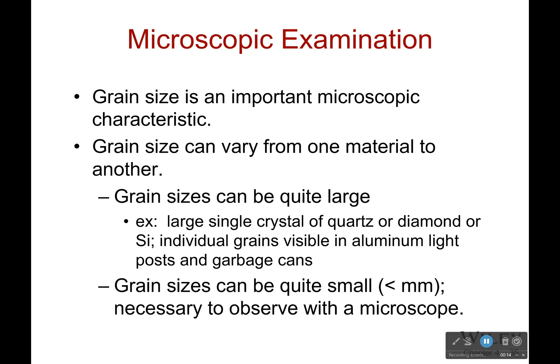For example, grain size is a microscopic characteristic — at least it's typically microscopic. But grain size can vary from one material to another. And before we talk about that, why do you think we care about grain size? Why is it important?